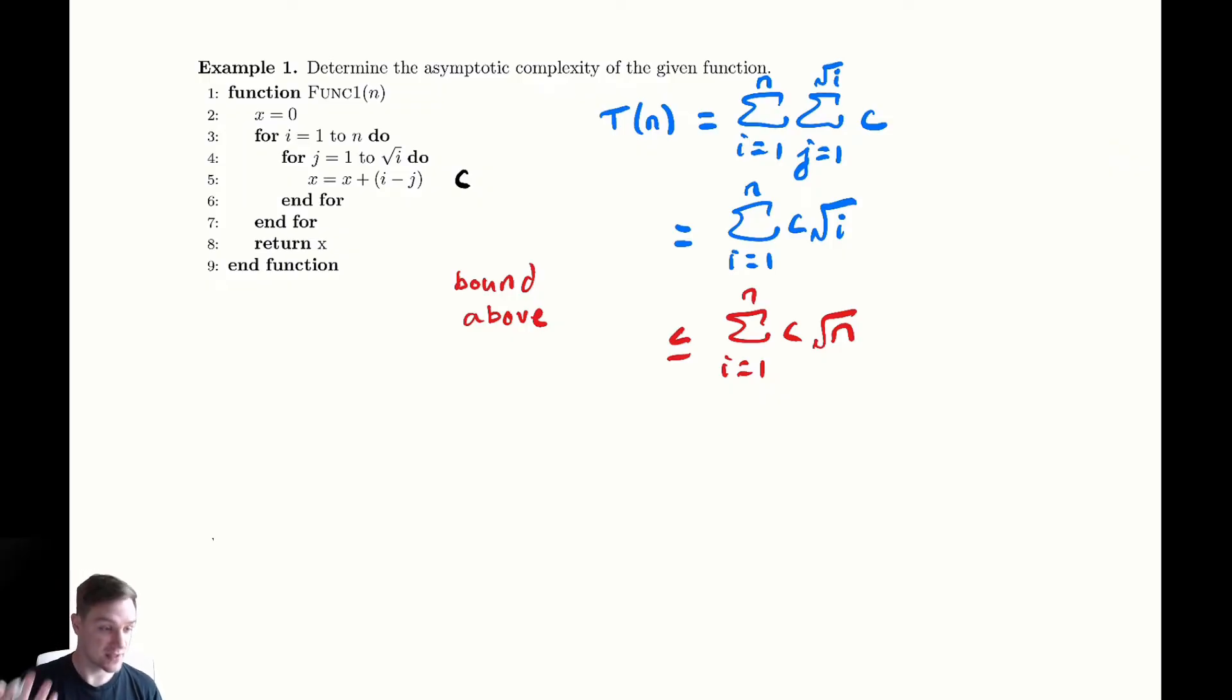Now we're adding up a fixed thing c radical i a fixed number of times n times and we get n copies of c radical n which all of this tells us that we are in big O of n to the three halves.